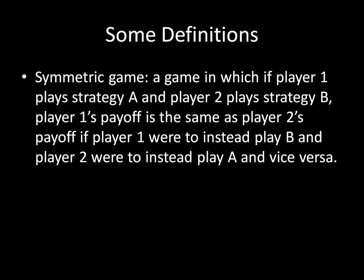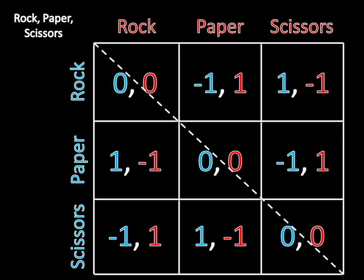Rock, Paper, Scissors is a symmetric game, so we can use it as an example. You'll notice that along the main diagonal I have drawn a dashed line, and that is supposed to help us understand what is symmetric about this game. If we're looking at a symmetric game, that implies some evenness — if both of us are playing the same strategy, then we should be getting the same payoffs. So if both players are playing Rock, or both players are playing Paper, or both players are playing Scissors, it's symmetric because each player gets the same payoff.